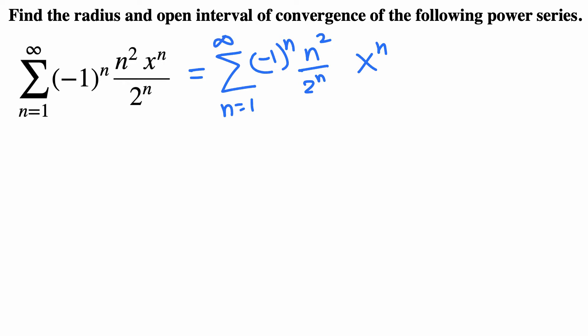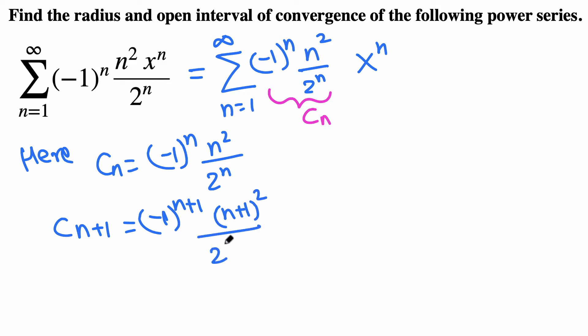We can say this is just constant cn times x to the n. So here we got cn is negative 1 to the n times n squared over 2 to the n. Then the next constant cn plus 1 would be negative 1 to the n plus 1 times n plus 1 squared over 2 to the n plus 1.